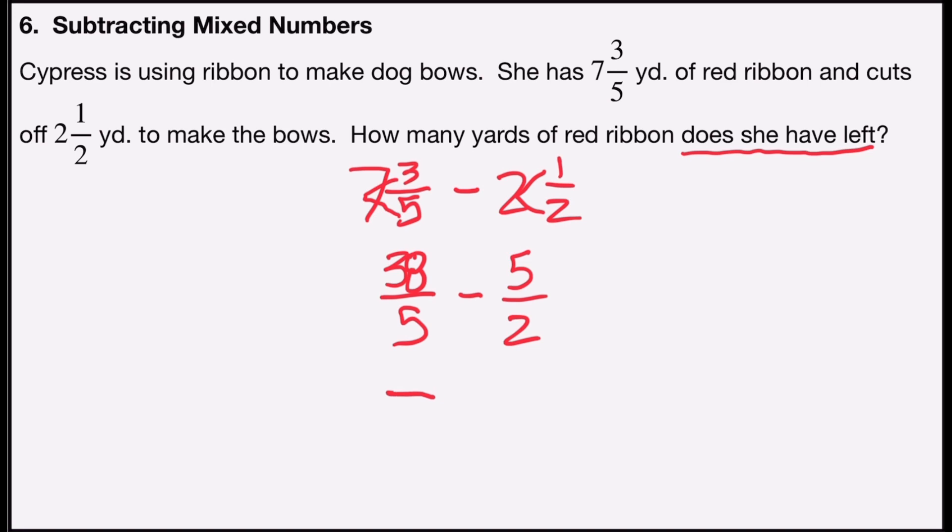And now I need to find a common denominator in order to subtract them. Since five and two are both prime numbers, all you have to do is multiply the two numbers together. So five times two is ten. That's a trick for finding a common denominator. If the two numbers are prime numbers, multiply them together and you'll always have your least common denominator.